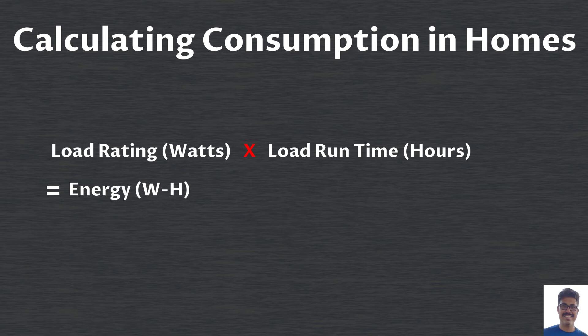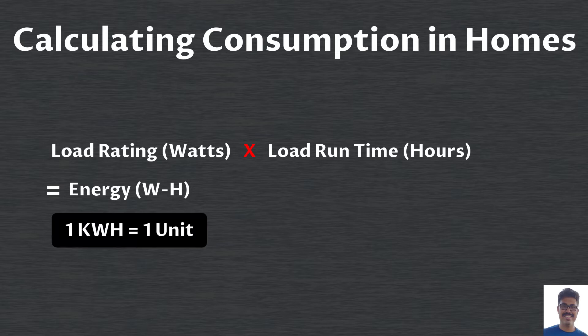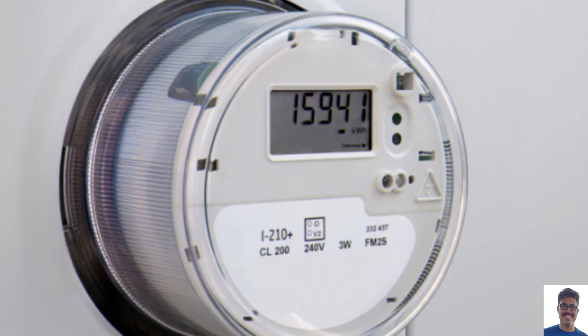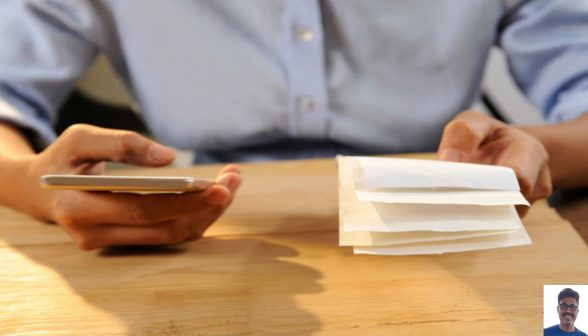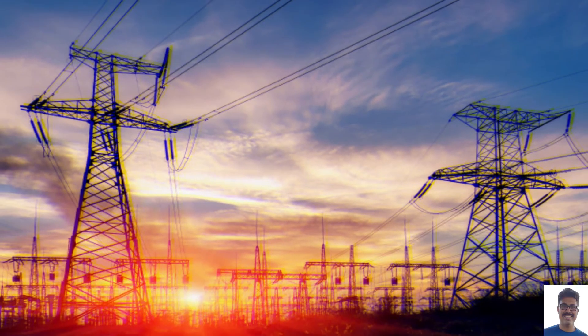Remember that one kilowatt-hour is equal to one unit. Whatever electric bill you are getting from your electric distribution company, they charge based on units consumed. So you should know that one kilowatt-hour equals one unit.